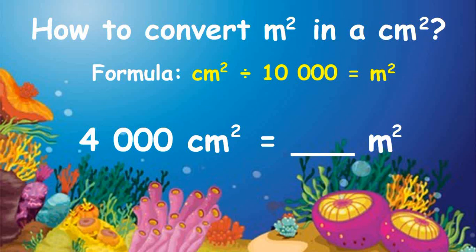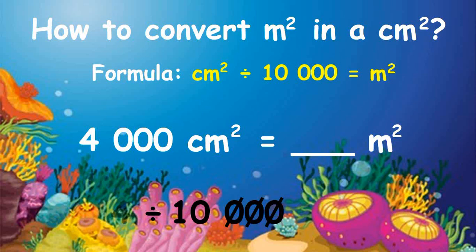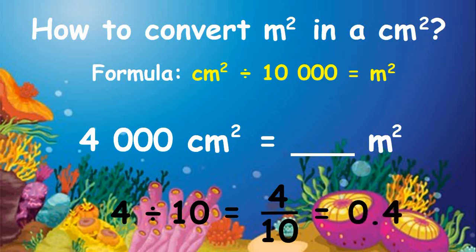To solve, divide 4,000 by 10,000. Cancel the zeros in the dividend the same as the number of zeros in the divisor. The only thing left is 4 and 10, which in fraction form is 4 over 10, and in decimal form is four tenths. Therefore, 4,000 square centimeters is equal to 0.4 square meters.